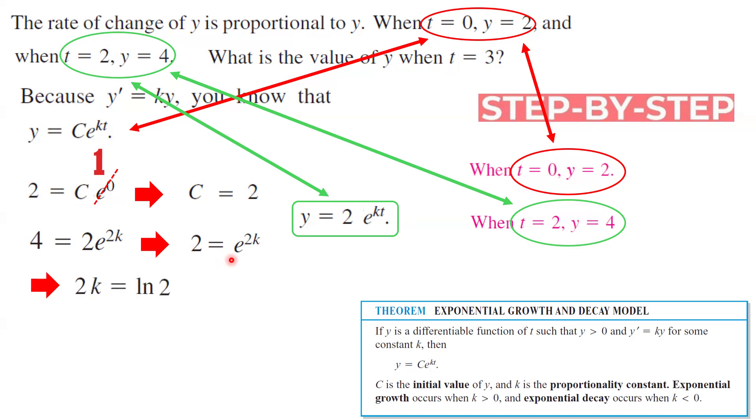So 4 is 2 times e to power 2k. From algebra, 2 is e to power 2k. Then we take the ln of both sides. 2k equals ln of 2. So k is a half ln of 2, and k is approximately 0.3466. We can write down our mathematical model as 2 e to power 0.3466 times t.